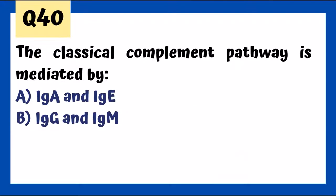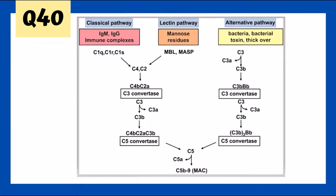The classical complement pathway is mediated by IgG and IgM — the mnemonic: GM makes classic cars. The three pathways are the classical pathway, the lectin pathway (which involves mannose residues), and the alternative pathway (which involves bacteria and toxins).